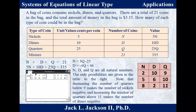Let's quickly verify one. With 2 nickels, 10 dimes, and 9 quarters: 5×2 = 10 cents in nickels, 10×10 = $1.00 in dimes, and 9×25 = $2.25 in quarters. That totals $3.35. You can check the other two combinations similarly — those are the only three possibilities.